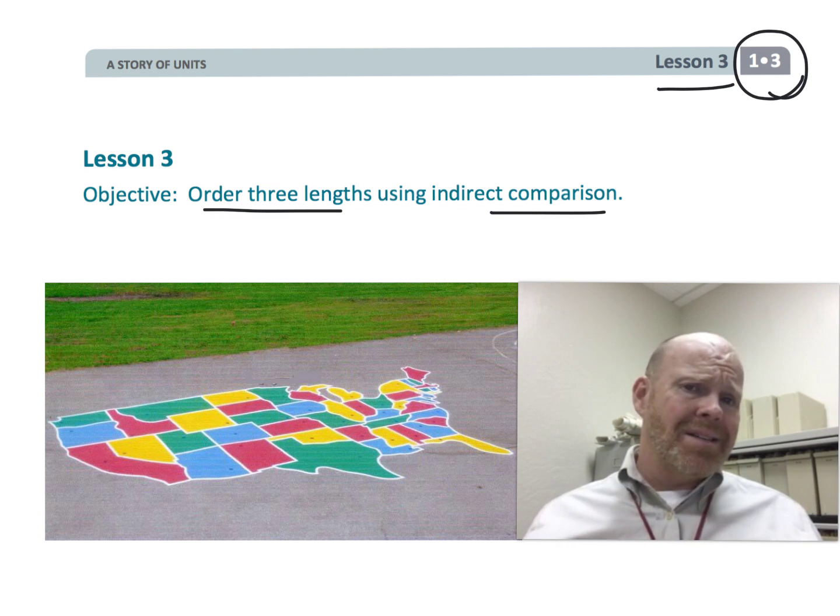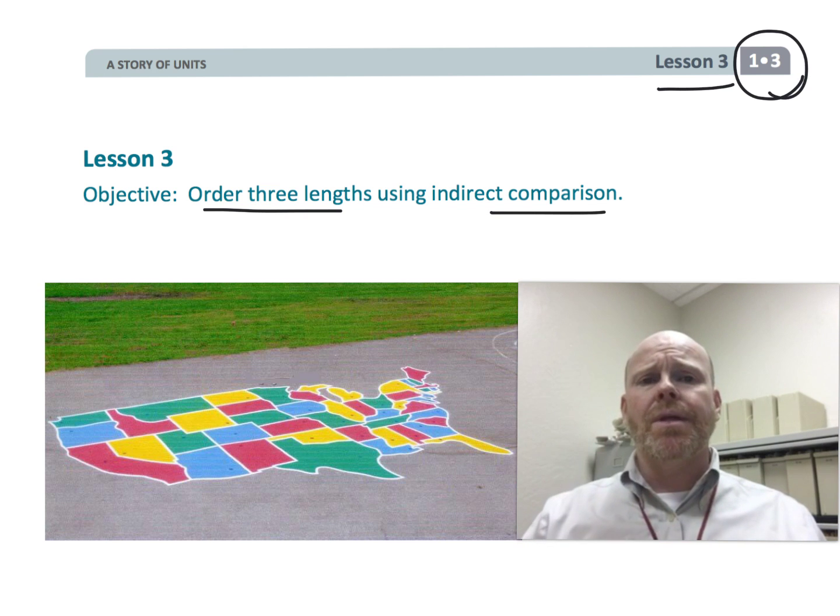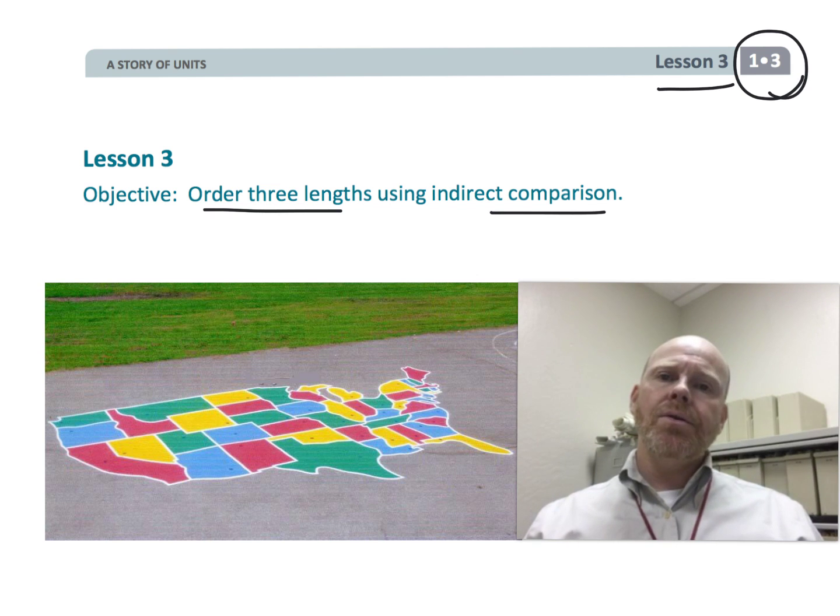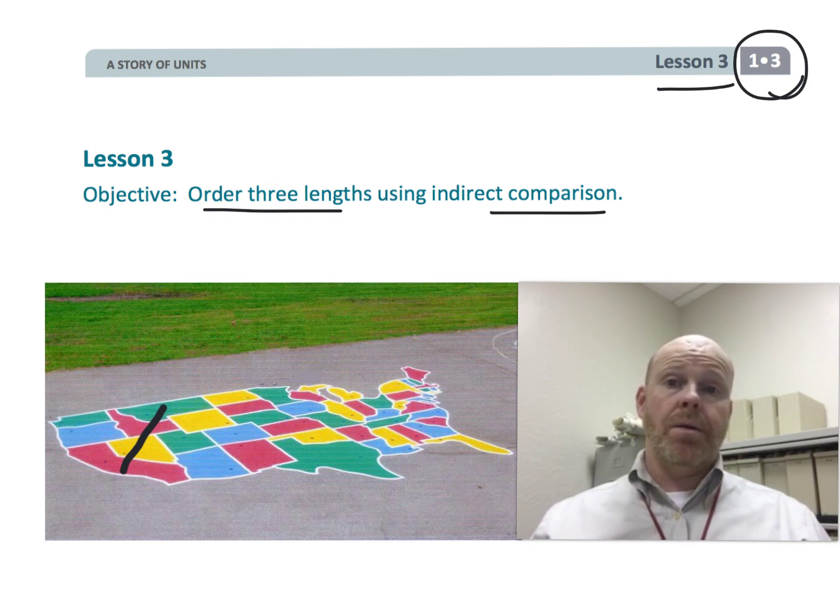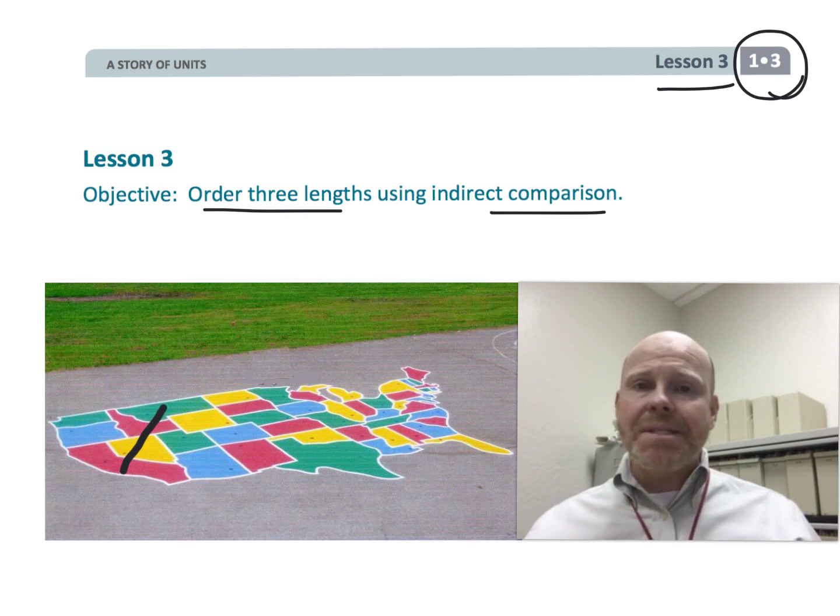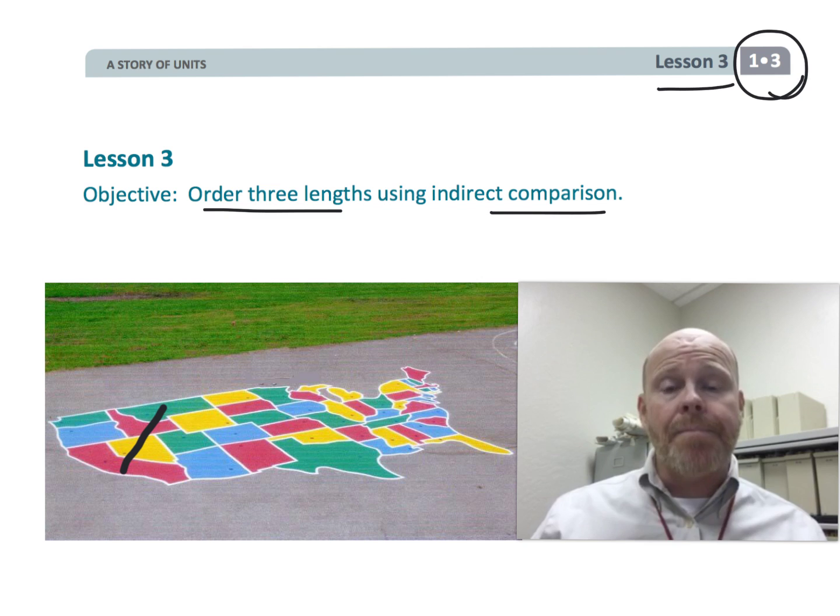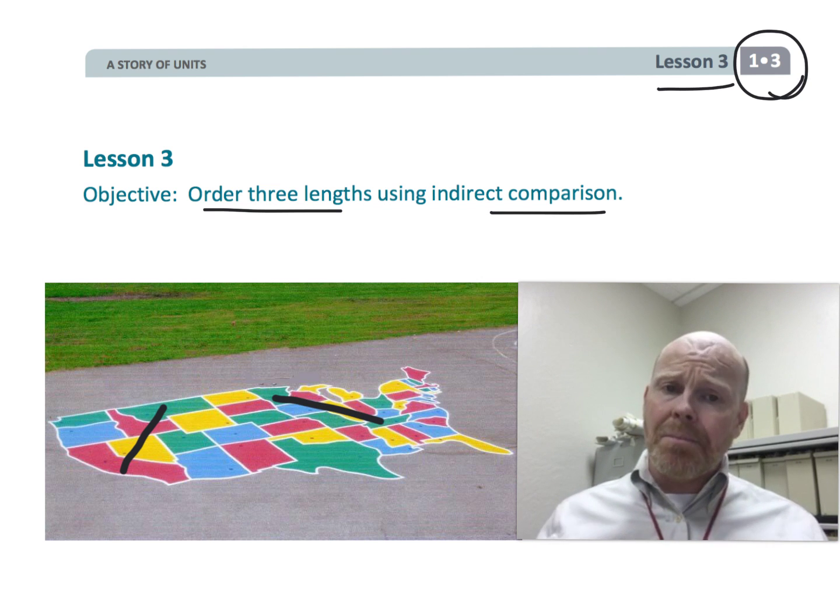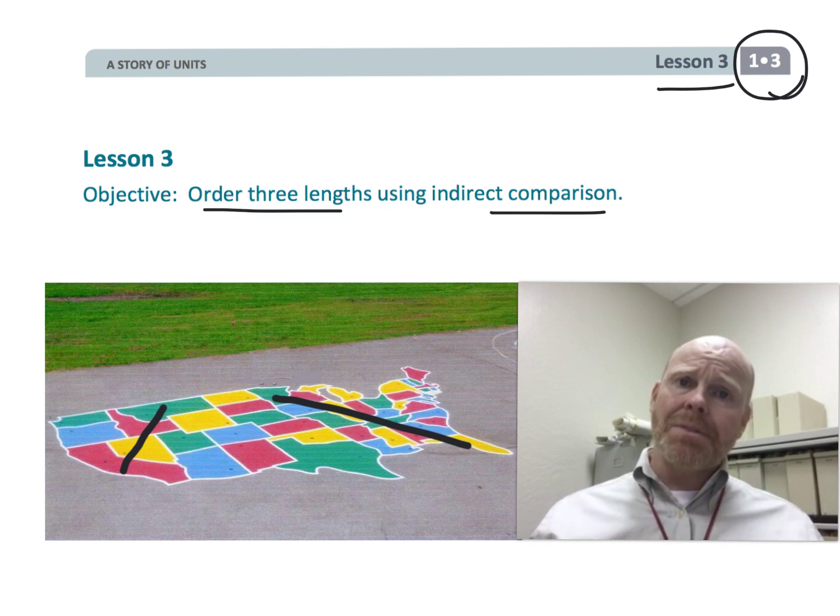One idea I came up with would be this playground, your classic playground of the United States. You can ask students what is the length from California to Montana, and then how many steps is it from Minnesota to Florida? Now you can compare the number of steps to go from California to Montana and the number of steps to go from Minnesota to Florida.